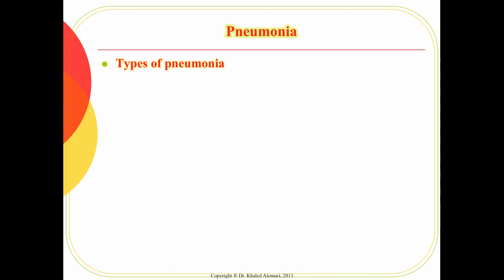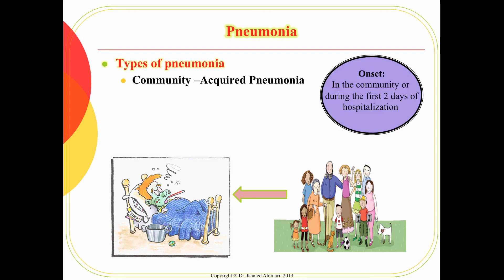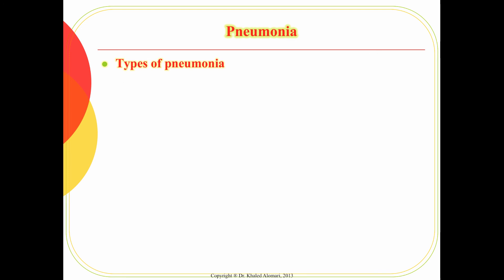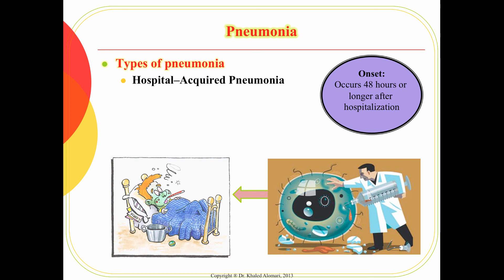We'll talk about two types of pneumonia based on where they were acquired. The first is community-acquired pneumonia, when a patient gets it before coming to the hospital. The clinical definition is that the patient shows symptoms or onset within two days of admission. If symptoms appear after 48 hours of admission, it is then considered hospital-acquired pneumonia — meaning the patient got it while hospitalized. This 48-hour cutoff relates to the incubation period of the microorganism.